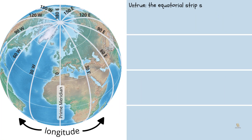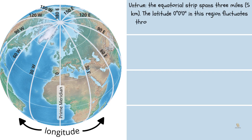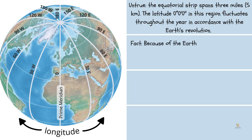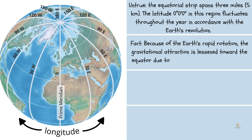The equatorial strip stands 3 miles, or 5 kilometers. The latitude 0 degrees 0 feet 0 in this region fluctuates throughout the year in accordance with the Earth's revolution. Fact: because of the Earth's rapid rotation, the gravitational attraction is lessened toward the equator due to the increased centrifugal force.